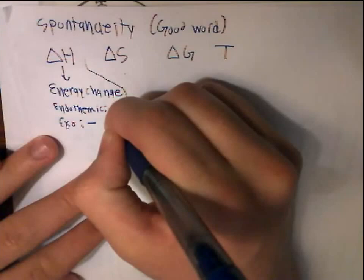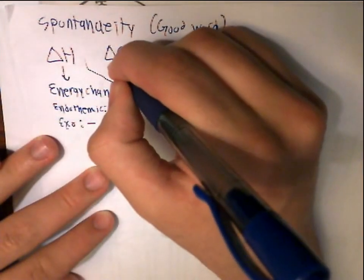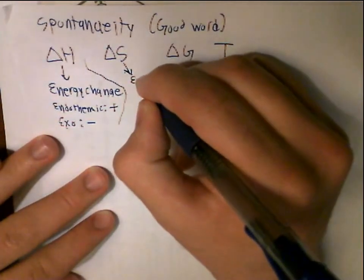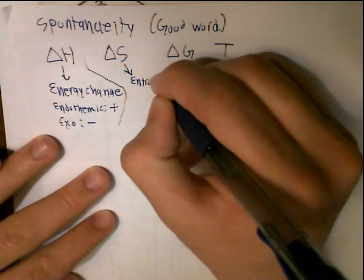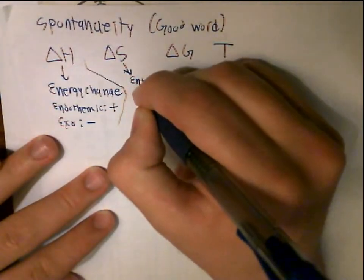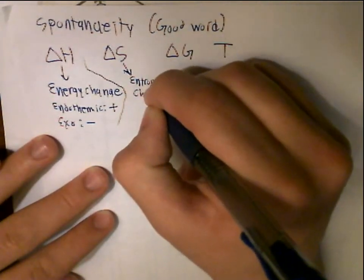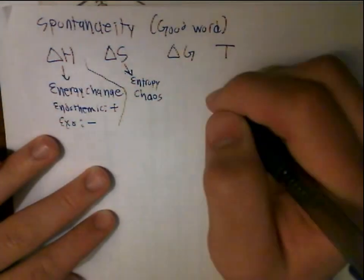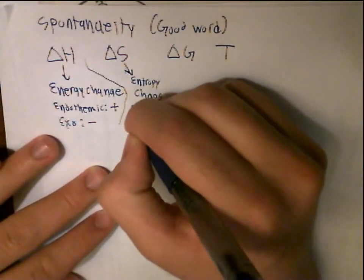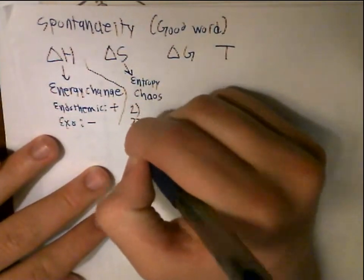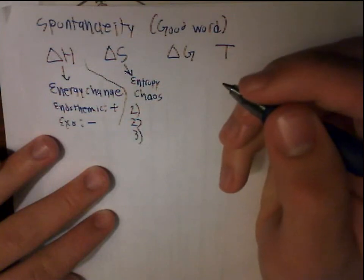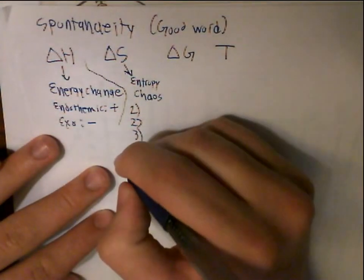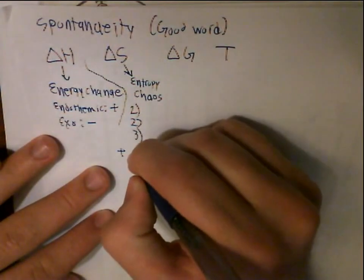Delta S is a measure of entropy, or chaos, or how crazy the reaction is. And there are three main ways to tell if an equation has a positive or negative delta S.